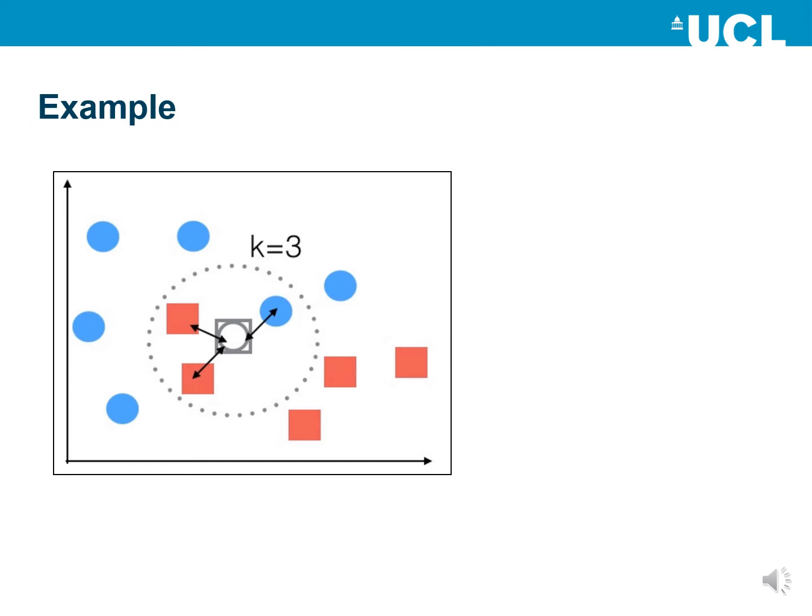Looking at this graph, you will see a two-dimensional plot of a feature space. In this particular example we have k equals 3, so for an unknown feature vector we take into account the three nearest neighbors. The three nearest neighbors are two red squares and one blue circle. Since we have more red squares than blue circles, the new label for the unknown feature vector will be red square.